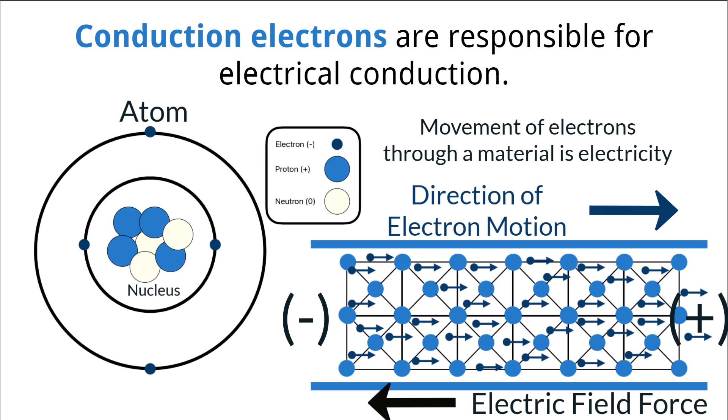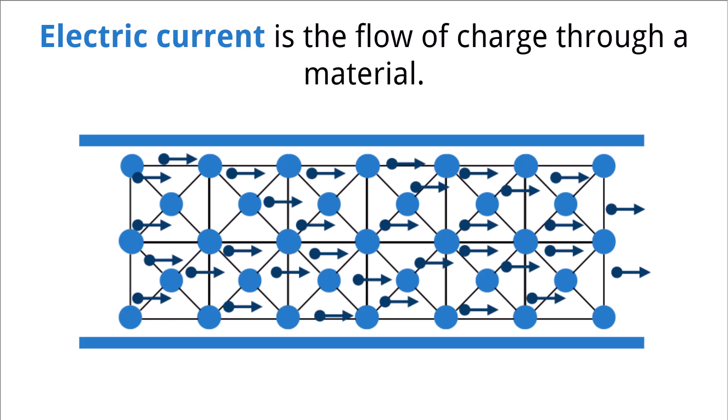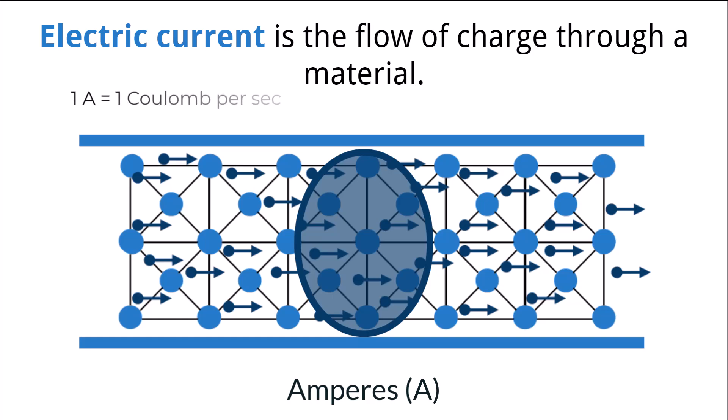It is the movement of these conduction electrons that are responsible for electrical conduction in metals. Electric current is the amount of flow of charge through a material. It is measured in a unit called amperes, whose symbol is the capital A. Electric current is similar to a current in water — it is a measure of how quickly a collection of charge is moving through a conductor, specifically at the rate of 1 coulomb per second.